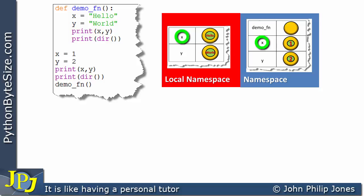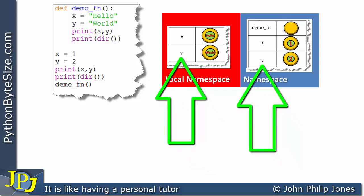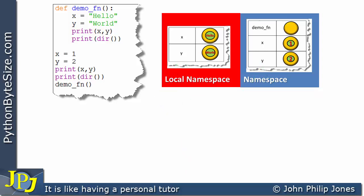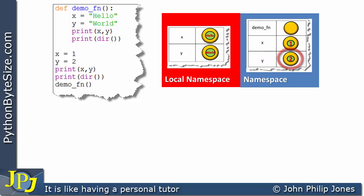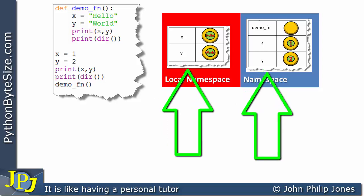As humans we may get confused by x appearing in two places within the code, but Python does not, because it keeps the x's separate by keeping them in their own namespace. The same is true for the name y: in one namespace y is bound to the string 'world', and in the other it is bound to the integer 2. Python knows they are different because they belong to their own namespace.